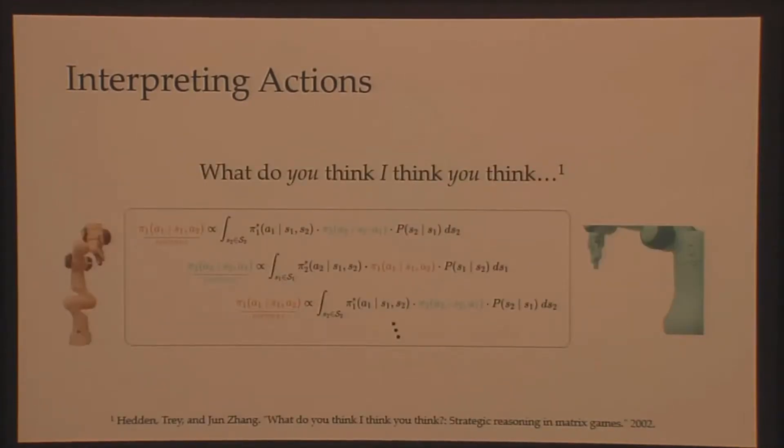And what you might notice in this previous slide is that the likelihood function I'm using to learn from my partner is actually my partner's policy. And my partner's policy relies on my policy, while my policy, again, relies on my partner's policy, so on and so forth. This is actually a pretty well-studied problem in the context of theory of mind and human-robot interaction, which leads to infinite recursion. I have no idea how to interpret my partner's actions because their actions depend on my actions, so on and so forth. Putting this into language, what do you think I think you think?